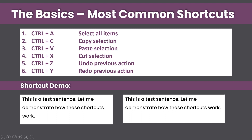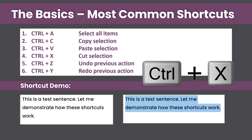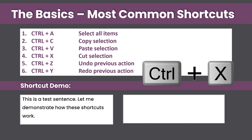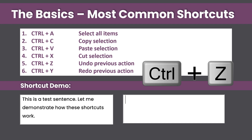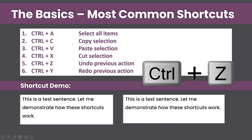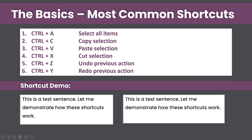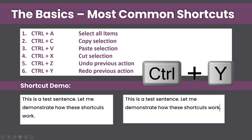To cut a selection, we can highlight it by pressing Ctrl+A and then press Ctrl+X, and that has cut the selection. If you want to undo your previous action, press Ctrl+Z, and that will undo the cut we just did. And to redo your previous action, press Ctrl+Y.